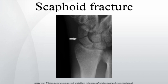Diagnosis: Clinically, patients present with snuffbox tenderness. Focal tenderness is usually present in one of three places: 1) volar prominence at the distal wrist for distal pole fractures; 2) anatomic snuffbox for waist or mid-body fractures; 3) distal to Lister's tubercle for proximal pole fractures.